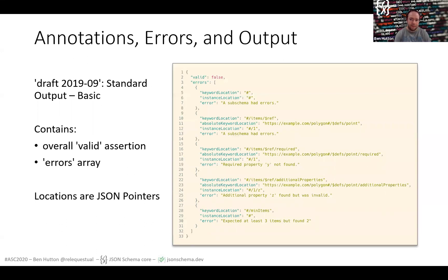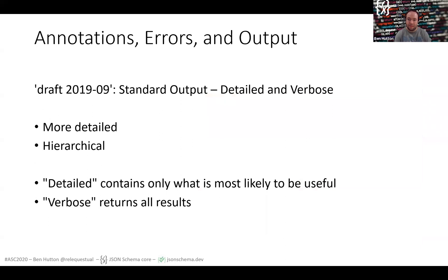Let's look deeper. The basic level shows an overall validation result and provides an array of errors. We're excited to see how implementations process this data to provide errors to their end users. Detail provides errors and a structure relating to the instance, and verbose is really for analysis, debugging and other tools, as opposed to general use cases. More about that in the specification itself.